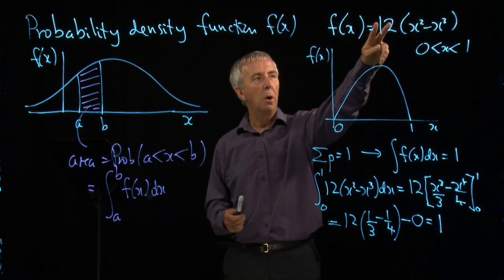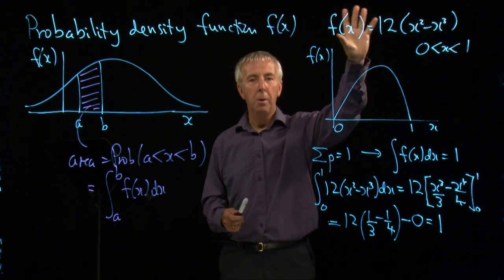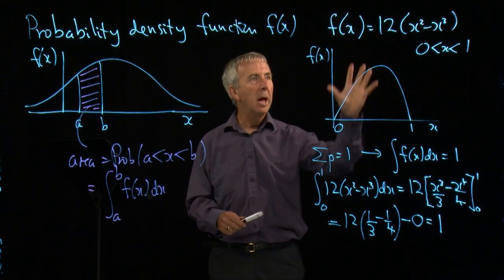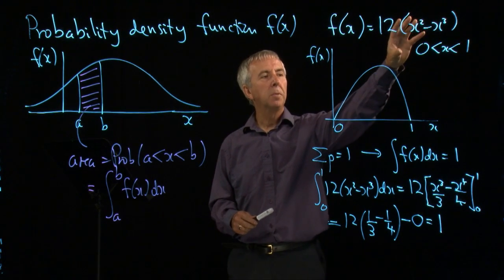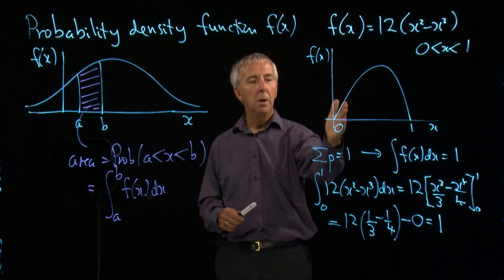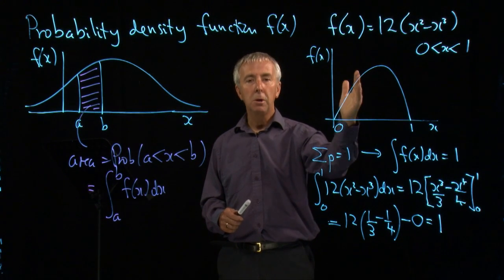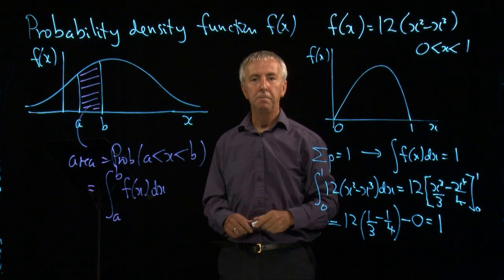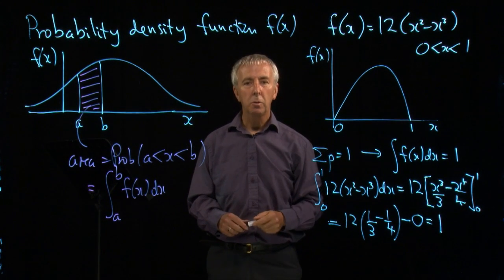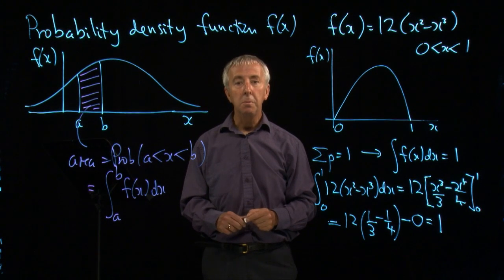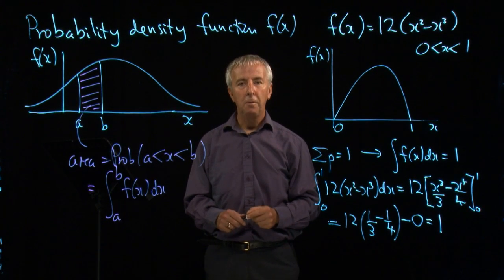And that of course is why I put the 12 there. If I put some other number, it wouldn't have been a total integral of 1. So now we have a density function, and from this we can work out probabilities, say of being between a quarter and a half, by doing the integral from a quarter to a half of this function. We can then go on, as we'll see later, to use the density function to find the mean and the variance of these distributions.